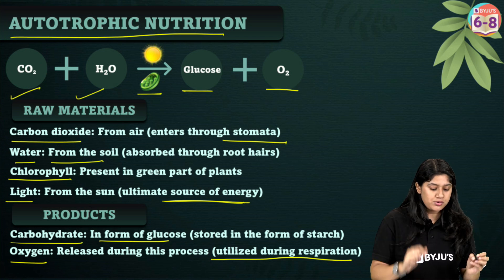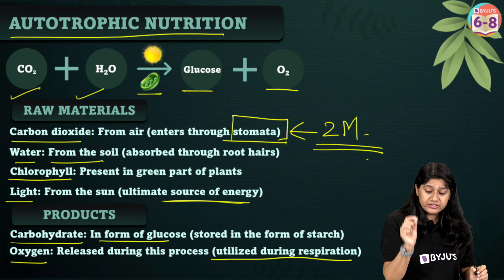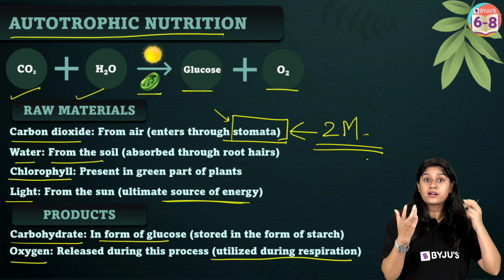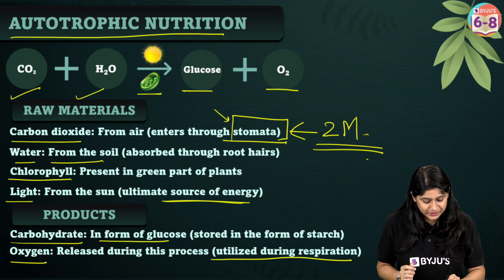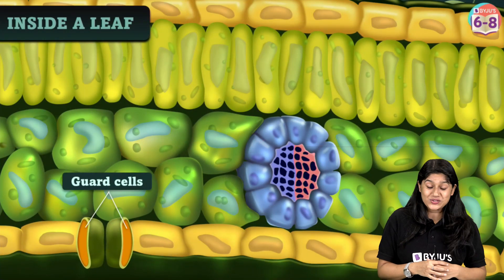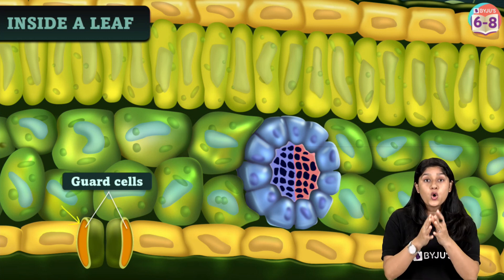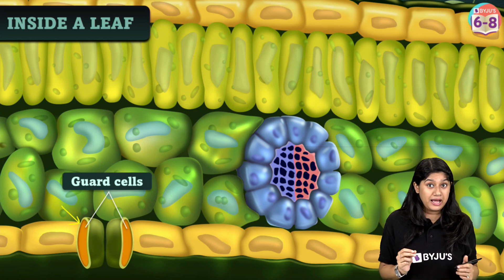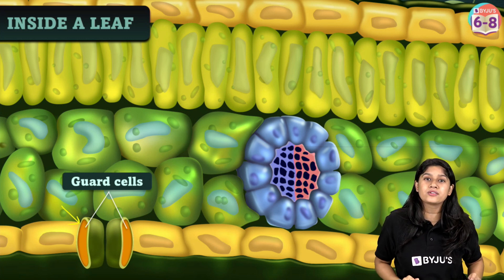An important term is stomata — it can definitely come in your examination. Carbon dioxide enters and oxygen gets exchanged through the stomata. Stomata are tiny little structures present on the leaves, guarded by guard cells. Stomata open and close, and as they do, gaseous exchange occurs in plants. Please make sure to note this down and remember about the stomata.